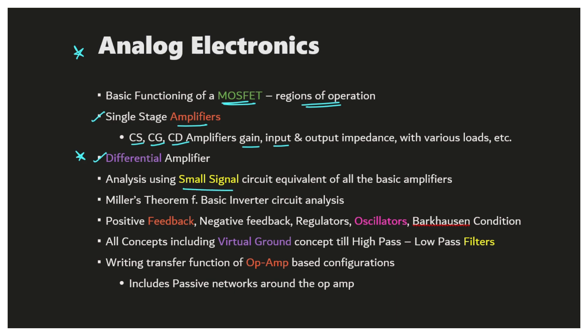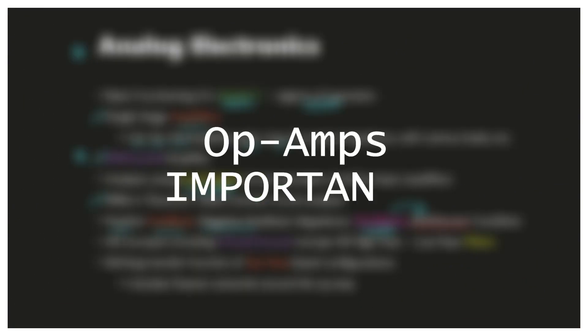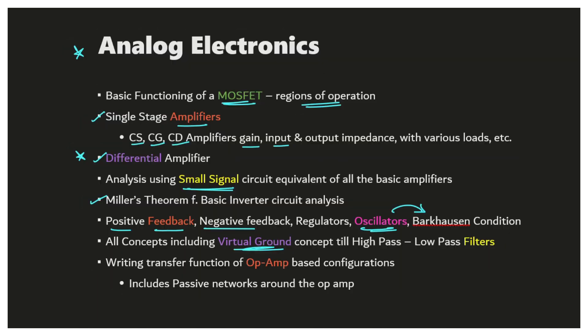Focus on analysis using small signal circuit equivalents of all the basic amplifiers, as small signal analysis is very important. Next, look into Miller's theorem. Also, there are sometimes questions on feedback amplifiers, so look into positive and negative feedback and the different types: shunt, series, and all the different kinds. Next, oscillators are important — focus on the Barkhausen criterion.